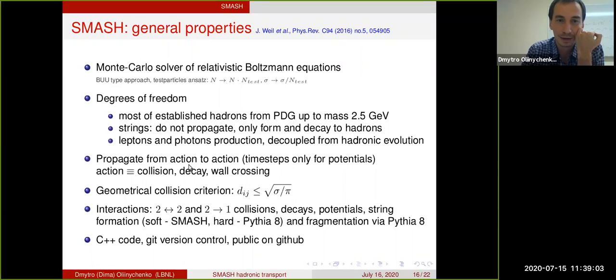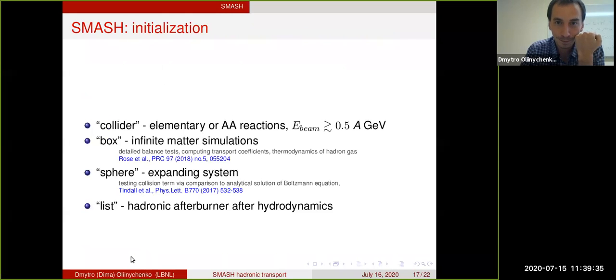Propagation is happening from action to action. This is interesting because in many codes you have propagation by time steps because people care about potentials. In SMASH is propagation from action to action. Then there is geometrical collision criterion, but there are also stochastic rates. Interactions are two-to-two and two-to-one collisions, decays, potential, string formations. I'm going to talk about interactions more. And again, it's a C++ code with all the modern infrastructure, what I want to mention here that's important.